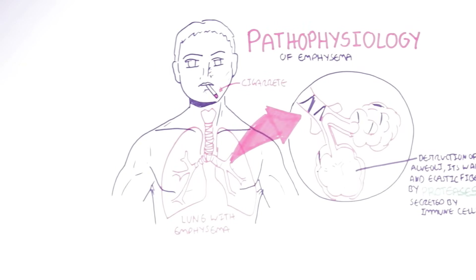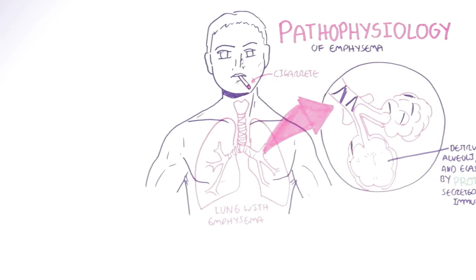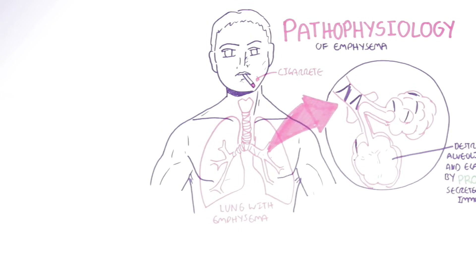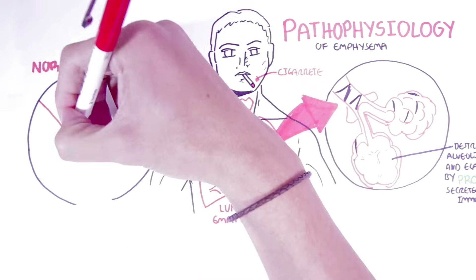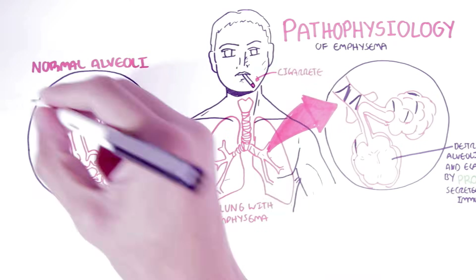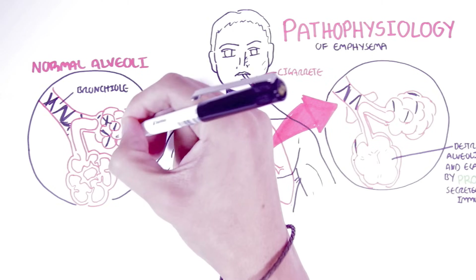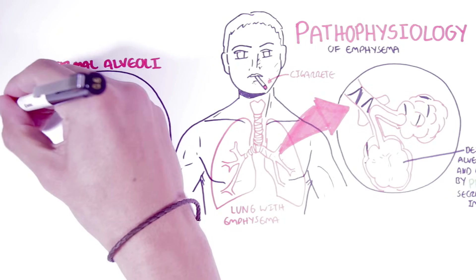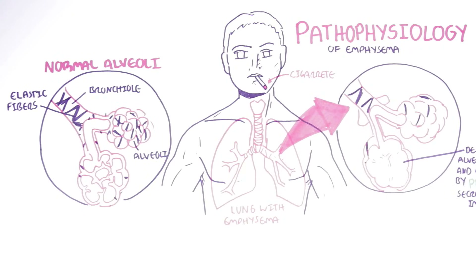Let's begin by looking at a normal alveolus and see how it progresses to an alveolus of emphysema. Here we have the bronchioles and the alveoli, made up of many alveolus. The elastic fibers are found on the alveoli and on the bronchioles, and they allow recoiling to occur during inhalation and exhalation of gases.